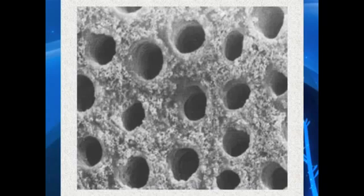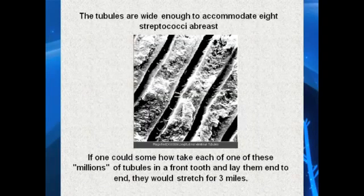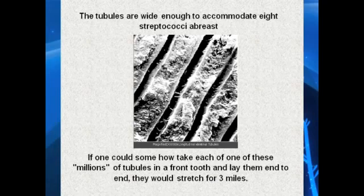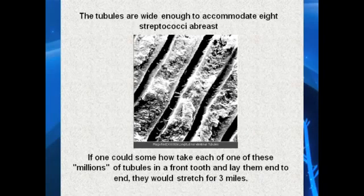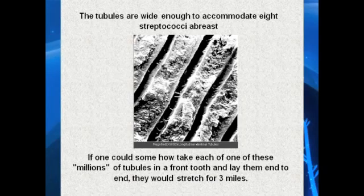This is a microscopic view of the dentinal tubules. If this tooth were alive, all of those tubules would be filled with a marrow-like substance. This is the cross section of those dentinal tubules. If you could take each one of these millions of tubules in a front tooth and lay them end-to-end, they would stretch for three miles. Realize that these tubules are wide enough to accommodate up to eight streptococci abreast.